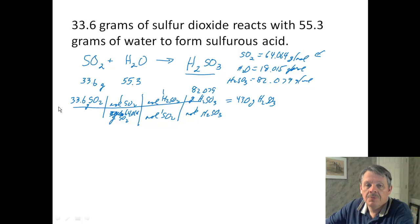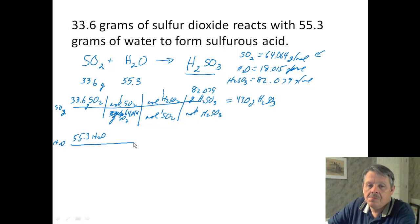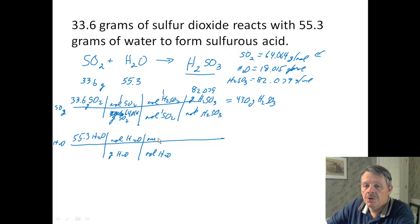Okay, let's try our next one. That was SO2. How about water as our beginning substance? We had 55.3 grams of water. And we have to get rid of grams of water and go to moles of water. And then for moles of water, we have to go to moles of sulfurous acid. And for moles of sulfurous acid, we have to go to grams of sulfurous acid.